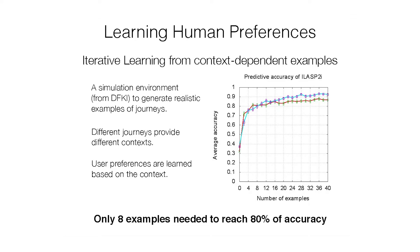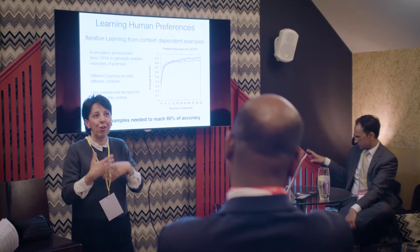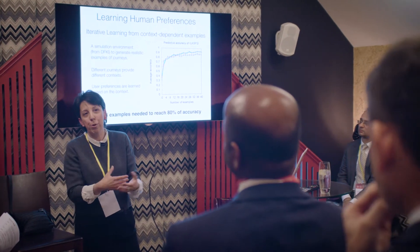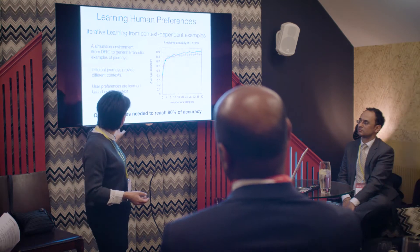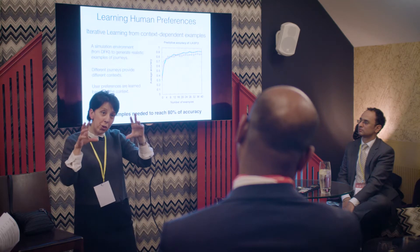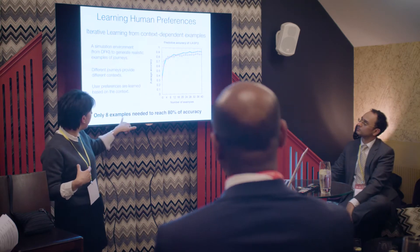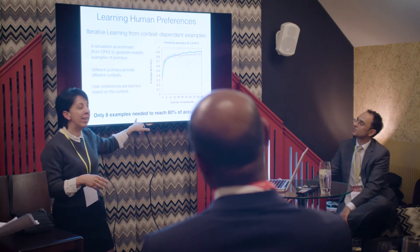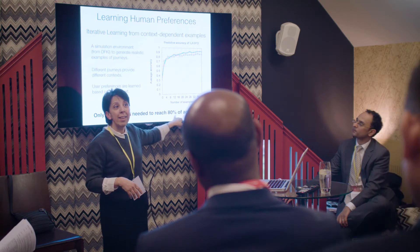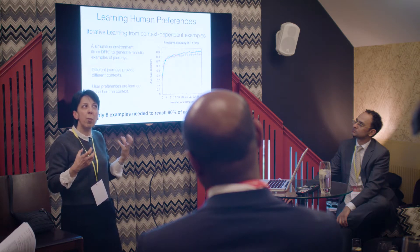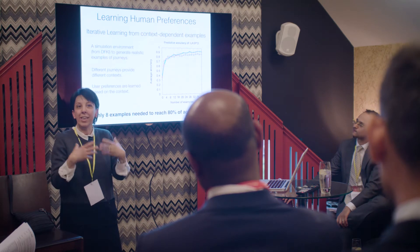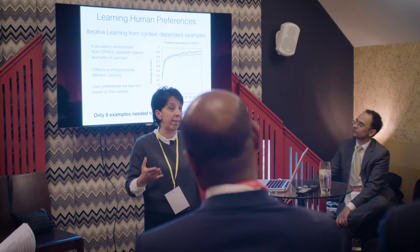How do we verify that what we have learned is correct? This is a typical problem in machine learning. There are statistical tests such as cross-validation — you build a model covering some examples, then test whether it predicts correctly on unseen ones. In our urban mobility work with people in Trento, Italy, we managed to converge to their preferences in fewer than eight examples, achieving over 80% accuracy. This is a really powerful system because it works on semantics rather than quantitative evaluation of feature weights.